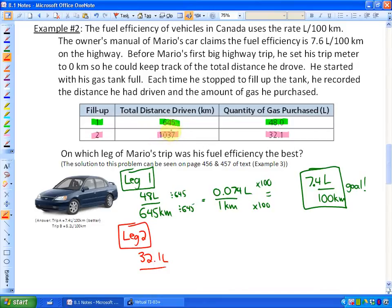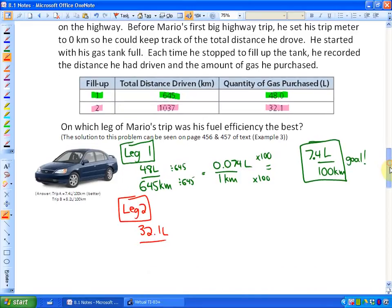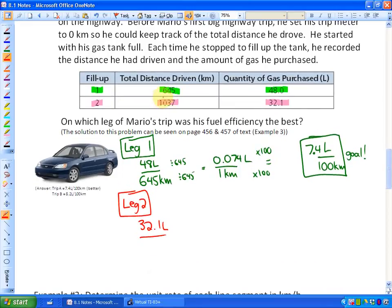is the distance he traveled since the previous fill-up. So if his odometer now said 1037 and in the last fill-up it said 645, the distance is going to be 1037 minus 645 kilometers.